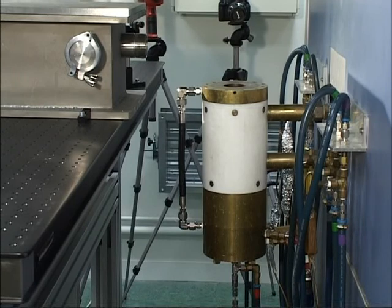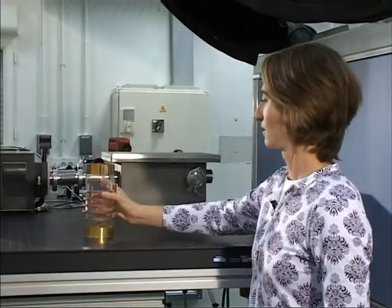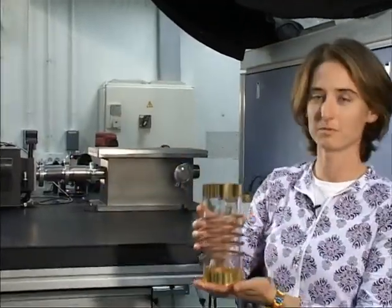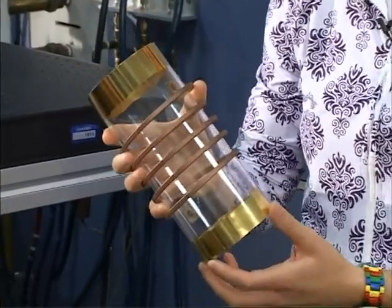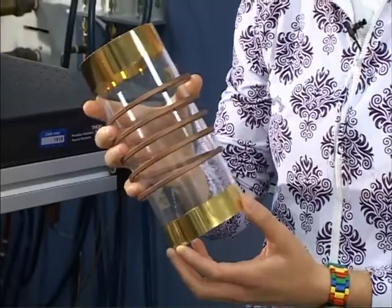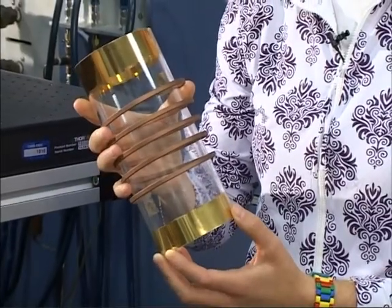This is the torch itself. This is an inductively coupled plasma torch. Inside the white cylinder there's a quartz tube and a copper coil. A four megahertz alternating current passes through the coil creating electric and magnetic fields which inductively heat the gas flowing through the tube that turn it into plasma.